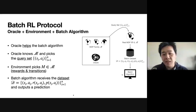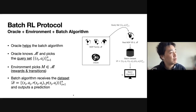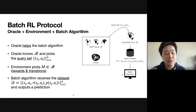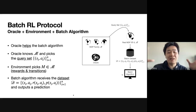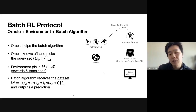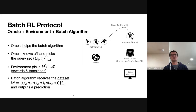A key clarification: the batch RL protocol means the oracle cannot adaptively choose later state-action pairs based on previous outcomes — it is non-adaptive. Otherwise the oracle could run an online algorithm and hand the online dataset to the batch algorithm. The fact that the oracle cannot see feedback is precisely what distinguishes this procedure from online learning. The batch algorithm chooses a sequence of state-action pairs blindly, before seeing which specific MDP nature chooses.